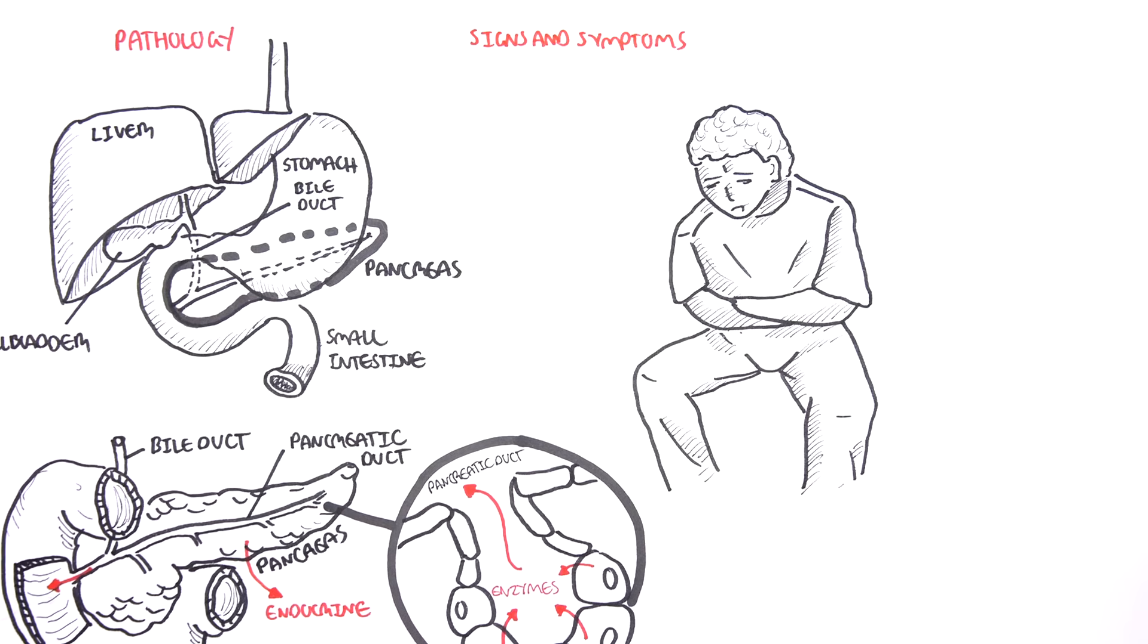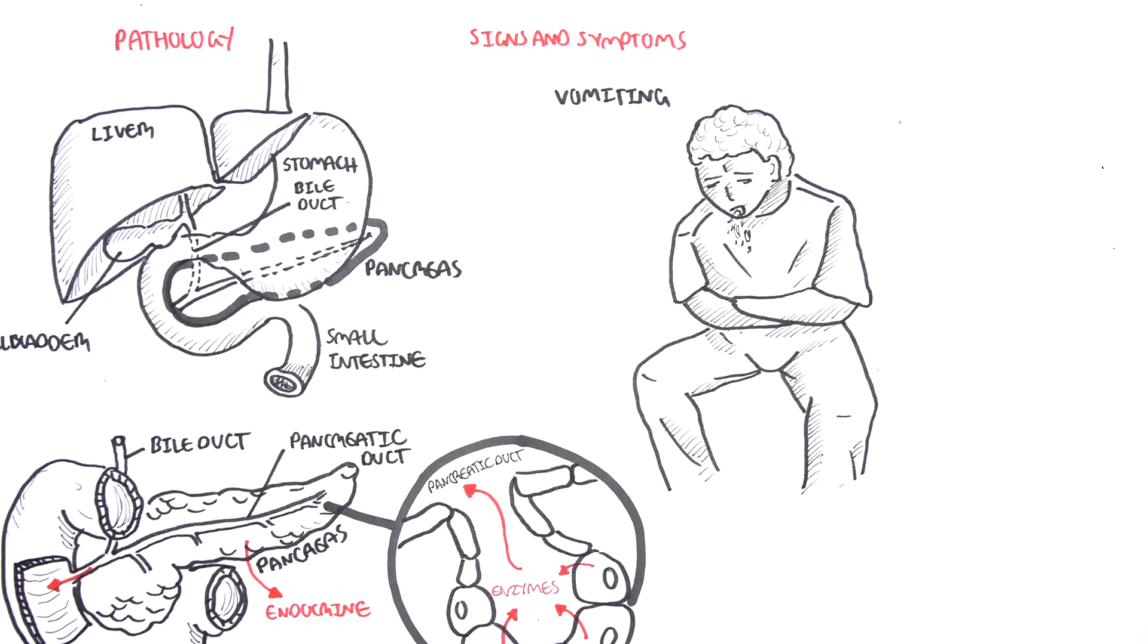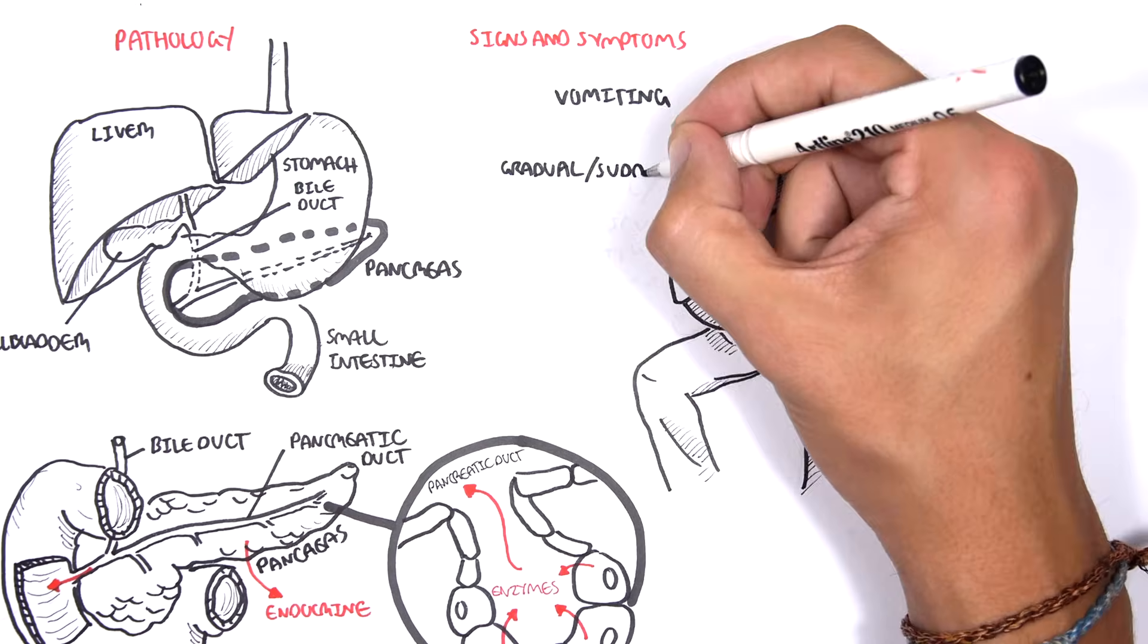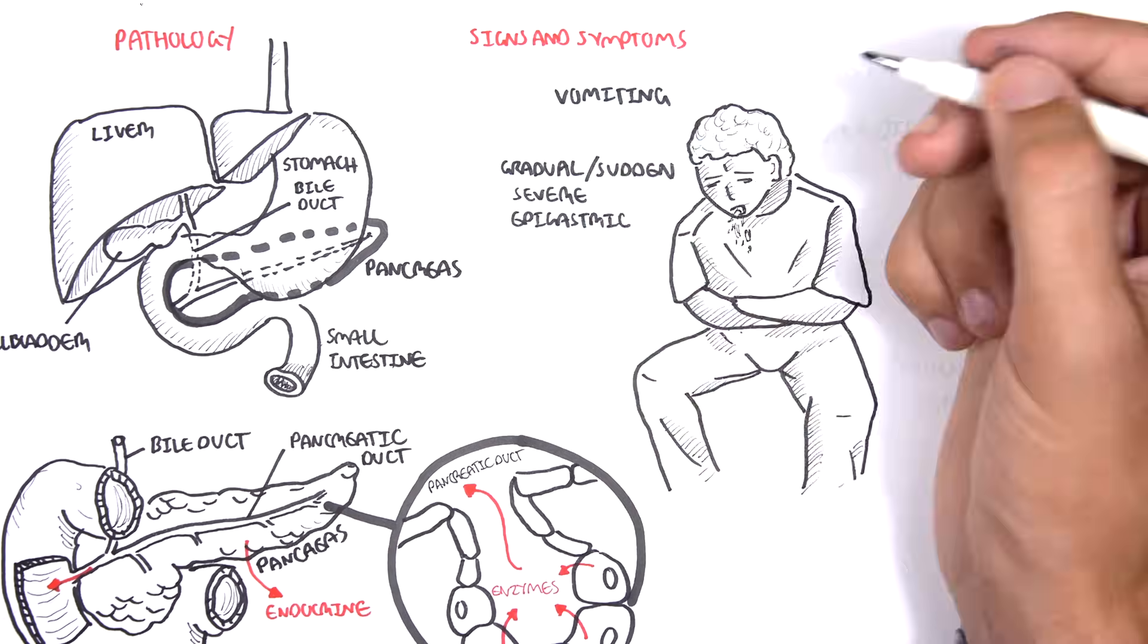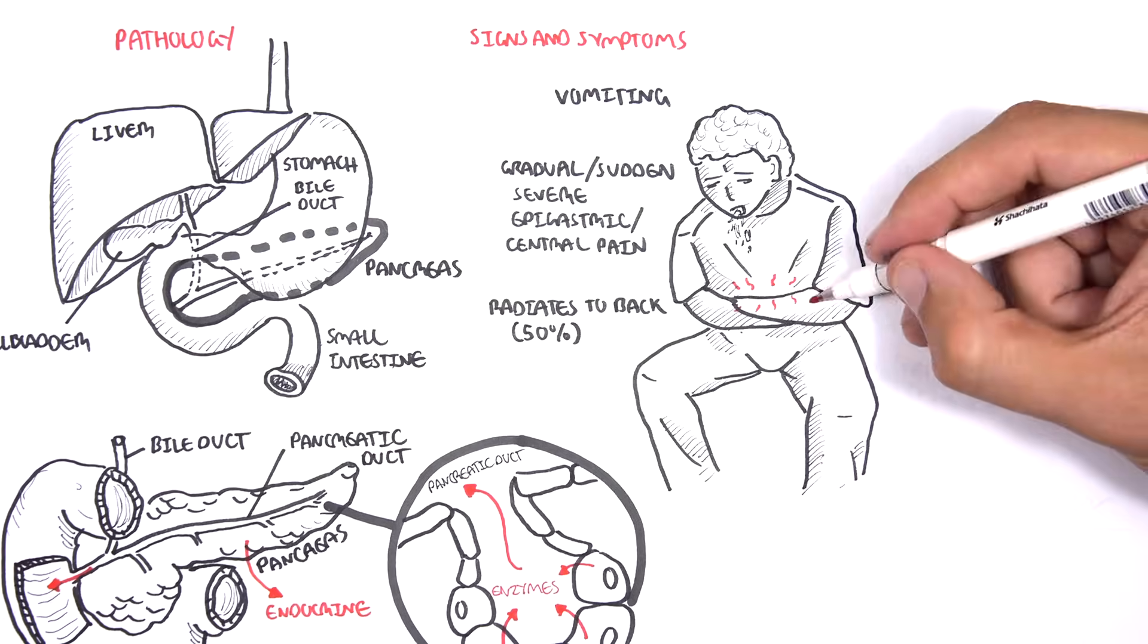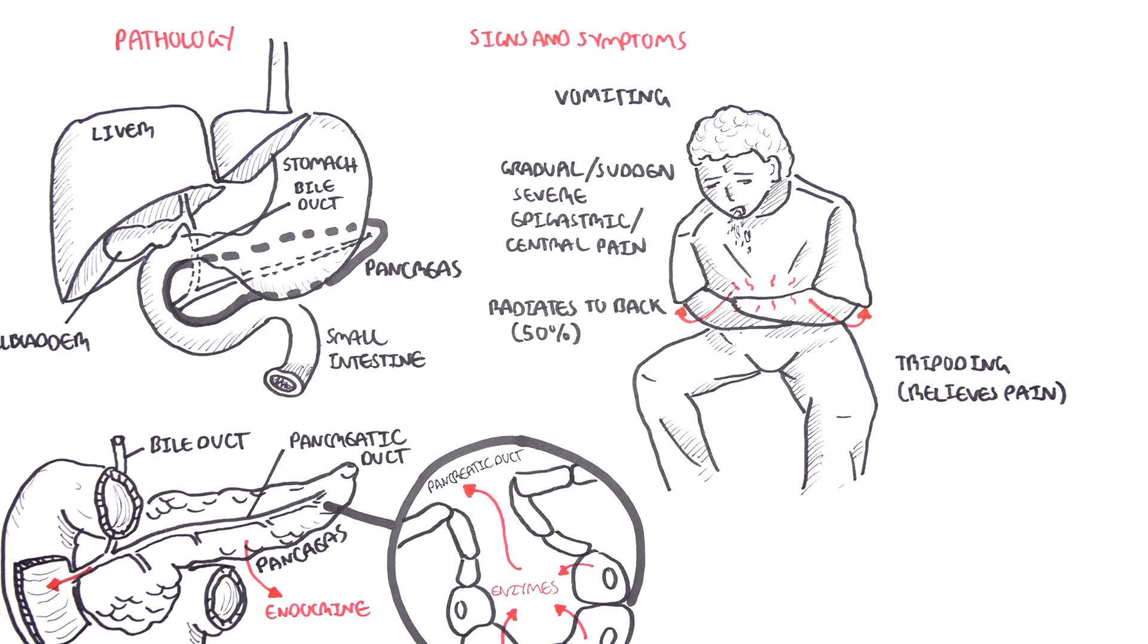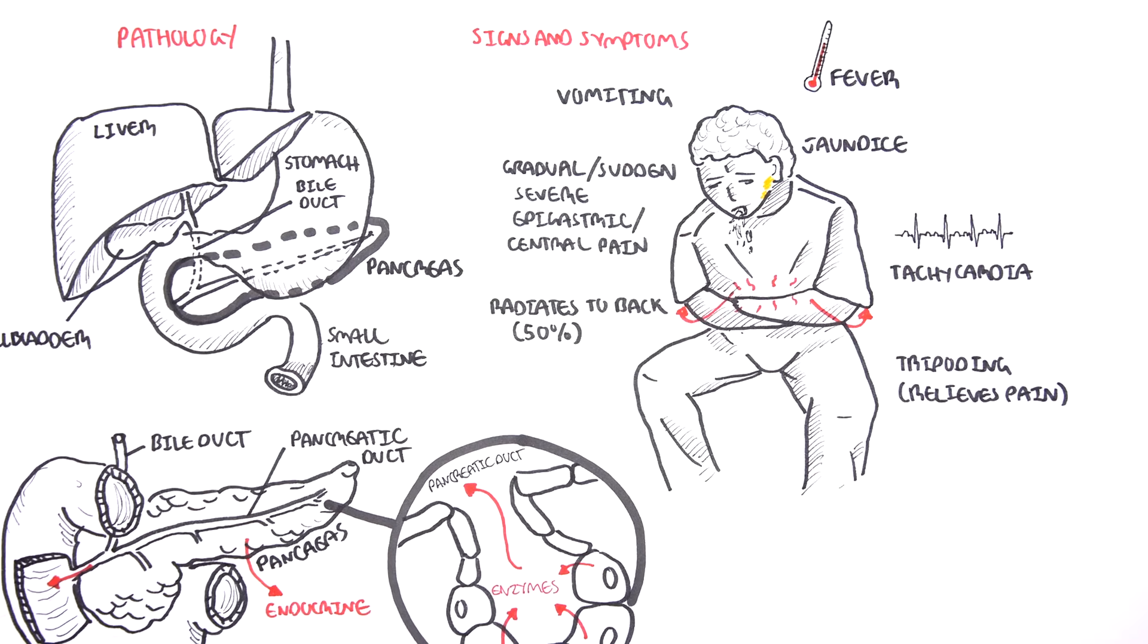Acute pancreatitis typically presents with the following signs and symptoms, including vomiting, gradual or sudden severe epigastric central pain, the pain can radiate to the back in 50% of cases, tripodding position relieves some pain, tachycardia, jaundice, and fever may also occur.